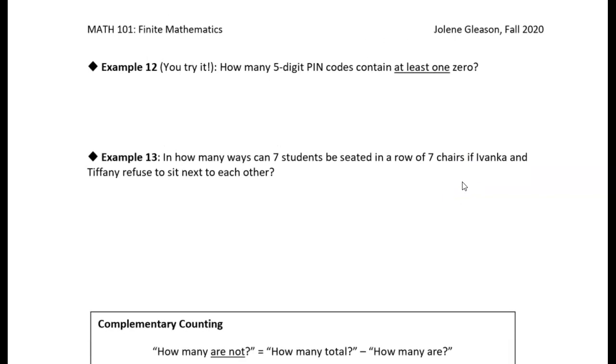So, because it's a lot easier to count the number of ways to create a five-digit PIN code with no zeroes, all right? So if we had no zeroes, then we'd have nine other digits, basically one through nine, right?